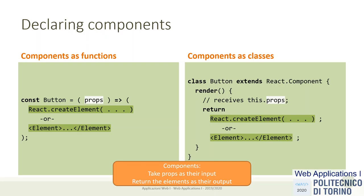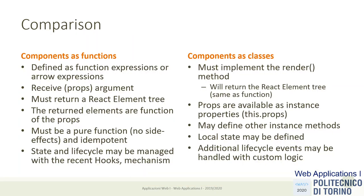A component is just something that constructs an element tree, customizing it depending on properties received from components above. These two methods are mostly equivalent. The difference is that the function receives props as an argument, while the class receives props as an instance value accessed via this.props. If we define a component as a class, we must define a render method, and we may also define other methods.